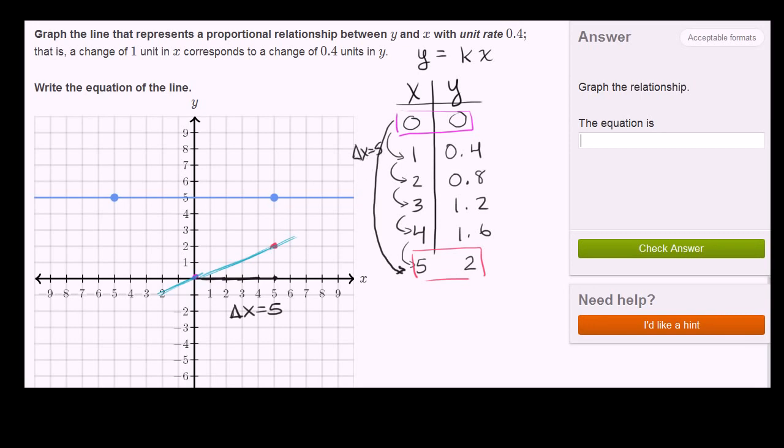What was our corresponding change in y? Well our corresponding change in y, when our change in x was 5, our change in y was equal to 2. And you see that here. When x went from 0 to 5, y went from 0 to 2. So our change in y in this circumstance is equal to 2.